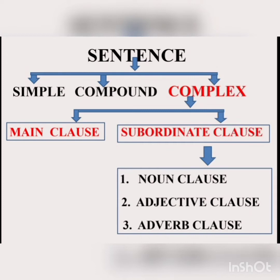The third type is the complex sentence. A sentence that has one independent clause — also called a main clause or principal clause — and one dependent clause, also called a subordinate clause. A subordinate clause is of three types: noun clause, adjective clause, and adverbial clause.